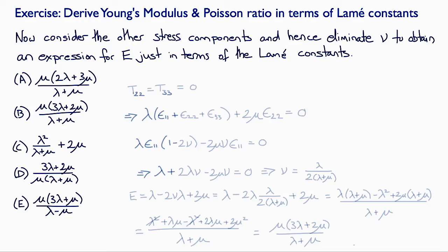So now we make use of the fact that the normal stresses perpendicular to the axis of tension, T22 and T33, are equal to 0, which gives us from the isotropic Hookean elastic solid's constitutive law that lambda times (epsilon 11 plus epsilon 22 plus epsilon 33) plus 2 mu times epsilon 22, or epsilon 33, is equal to 0.